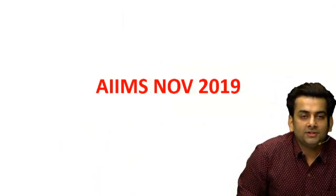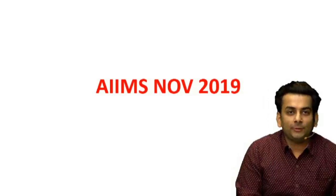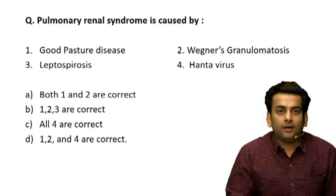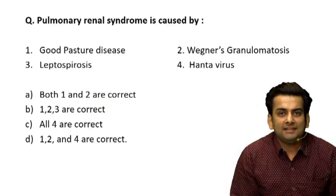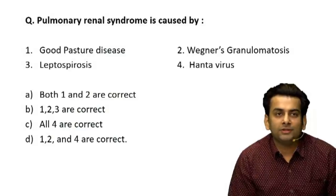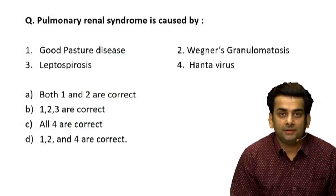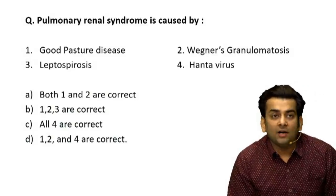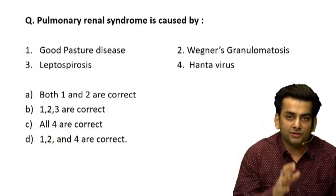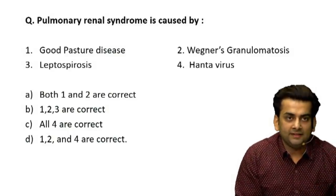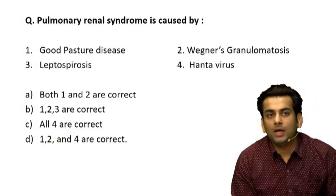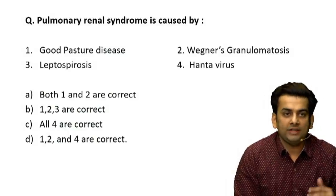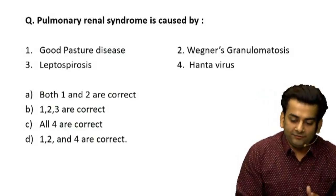We are here to discuss the recent medicine question that appeared in the AIIMS November 2019 exam. It was a very nice yet conceptual question: 'Pulmonary renal syndrome is caused by: (1) Goodpasture's disease, (2) Wegener's granulomatosis, (3) Leptospirosis, (4) Hantavirus.' It was a multiple correct option question, a new inclusion in AIIMS. The options were: A) both 1 and 2, B) 1, 2 and 3, C) all four, or D) 1, 2 and 4.